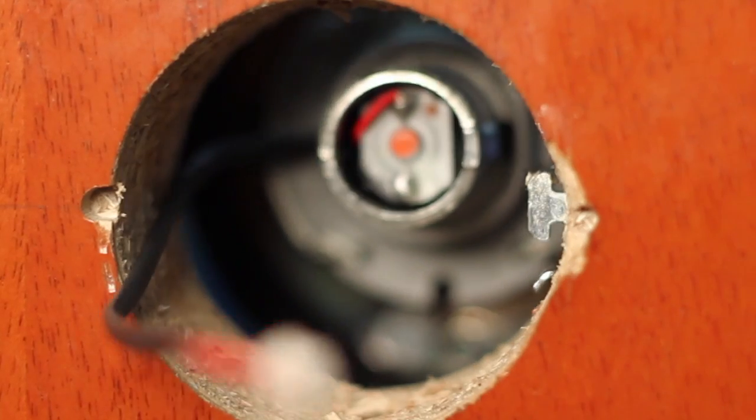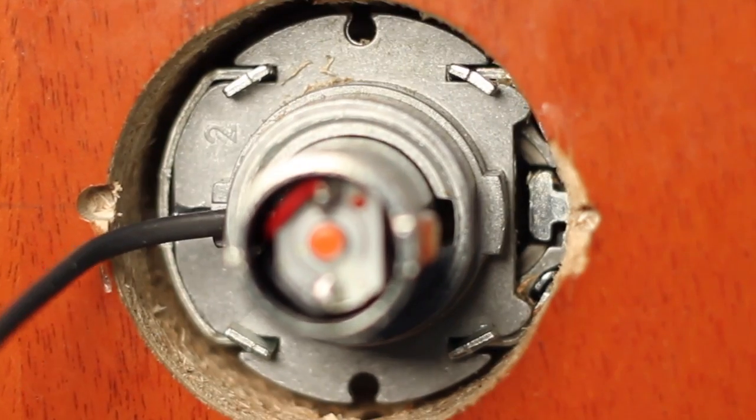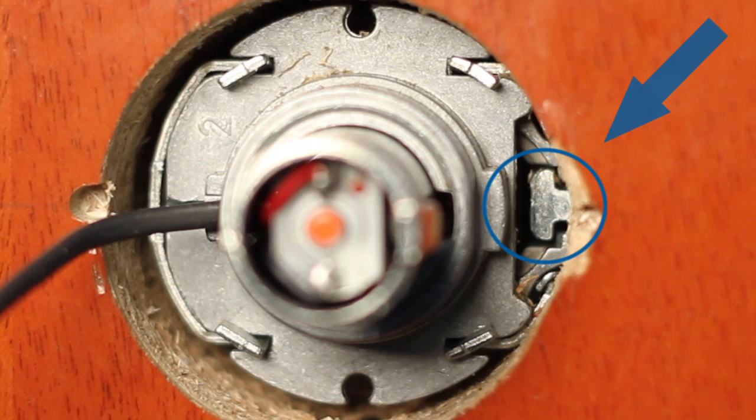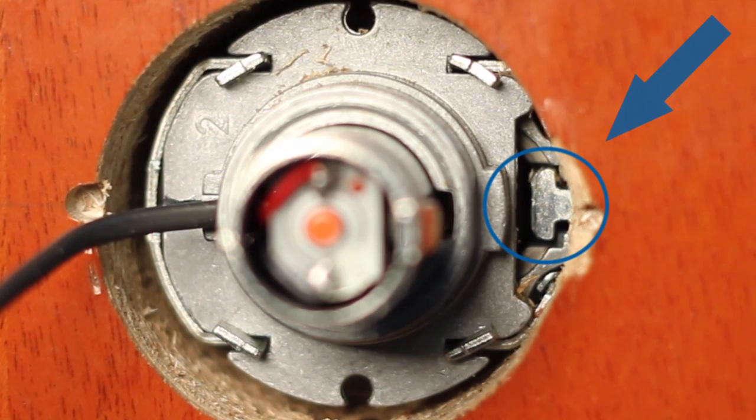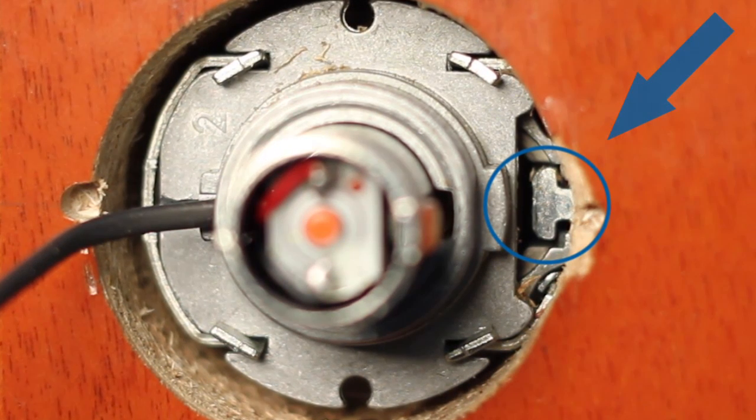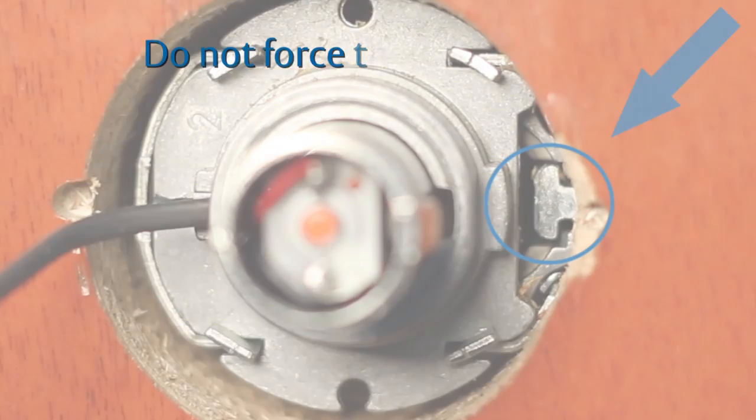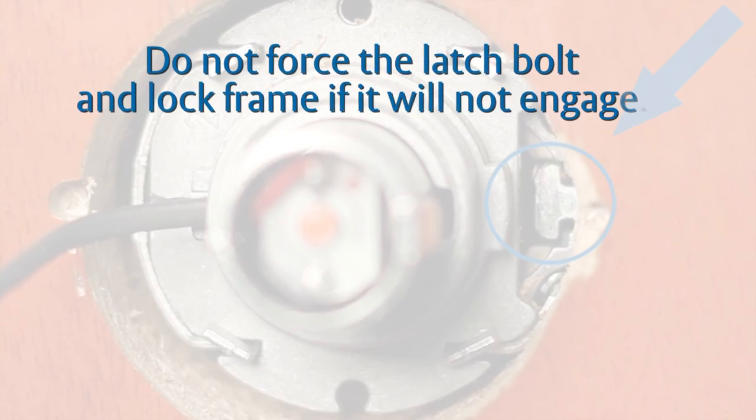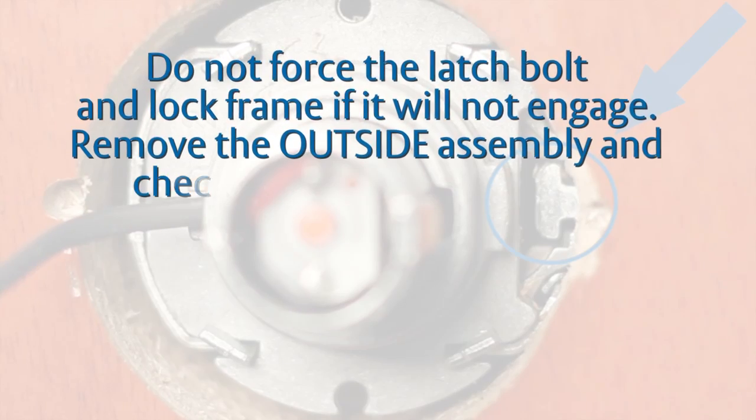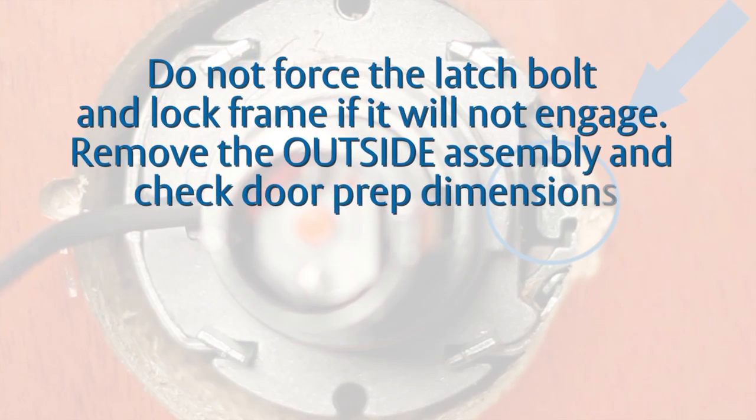Take the outside assembly and insert assembly through the 2 1⁄8-inch hole in door. Ensure that the lock frame engages with the latch bolt tails as shown. Latch bolt tails must engage the lock frame to operate correctly. Do not force the latch bolt and lock frame if it will not engage. Remove the outside assembly and check door prep dimensions.